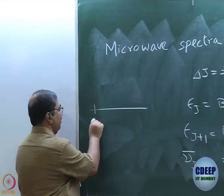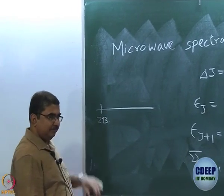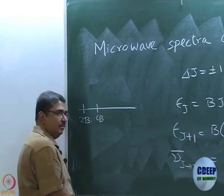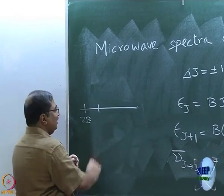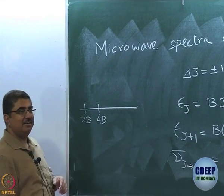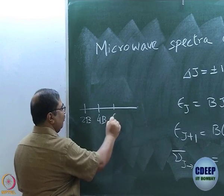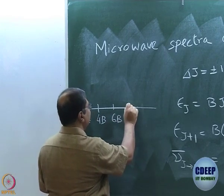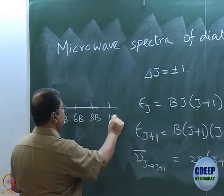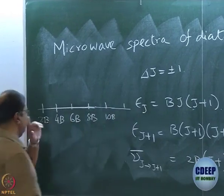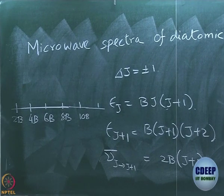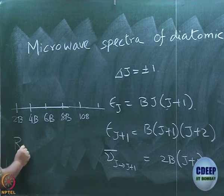The next line is at 4B, then 6B — I managed to invent a new alphanumeric character there. There is no point in working out each and every one; we understand they are going to be equispaced, and so on. This equispacing holds for a rigid rotor — don't forget that.